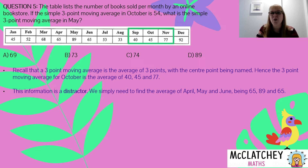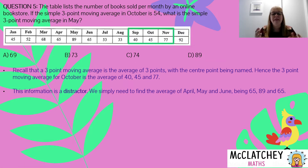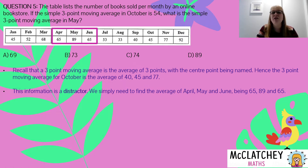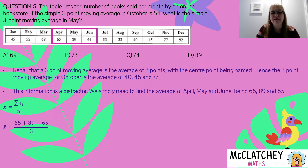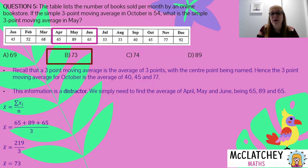Now, you might be thinking: why have they given me that information? It's what we call a distractor — it's not really relevant, but it's a nice clue the QCAA has given you. If you didn't know how to calculate the three-point moving average, you could find that the sum of 40, 45, and 77 divided by three gives 54, which confirms the method. For May, we add together the values for April, May, and June — 89, 65, and 65 — and find the average. That gives us 219 divided by 3, which is 73. Looking at our choices — 69, 73, 74, 89 — there's only one possible answer, and that is B.